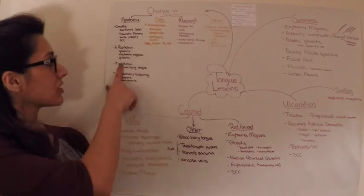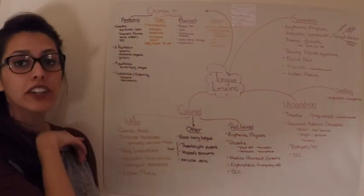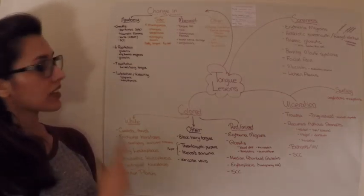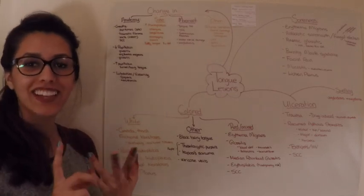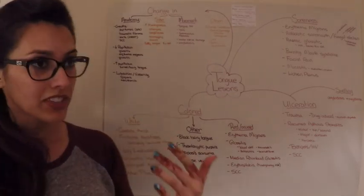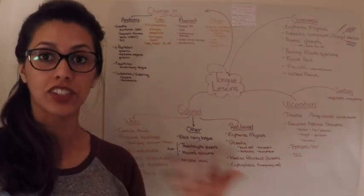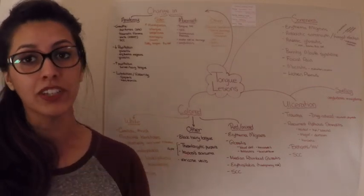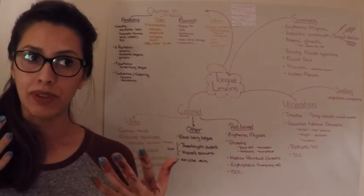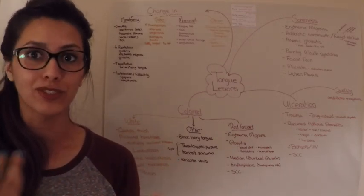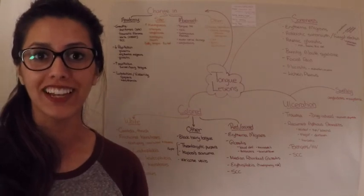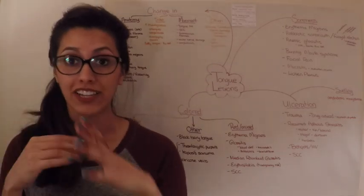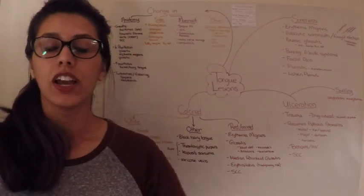Decreased papulation—we talked about this: glossitis, erythema migrans (geographic tongue), and lichen planus. Increased papulation in patients with fur tongue or hairy tongue—it's the same thing, one is just longer. You'll typically find this in elderly patients who can't eat hard or abrasive foods, who are on a soft diet, or patients who are nil by mouth.